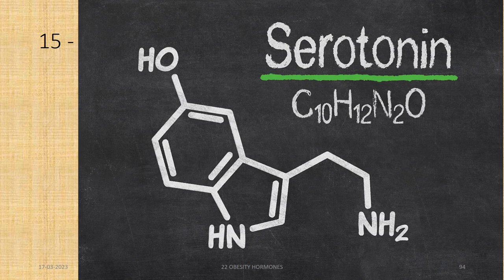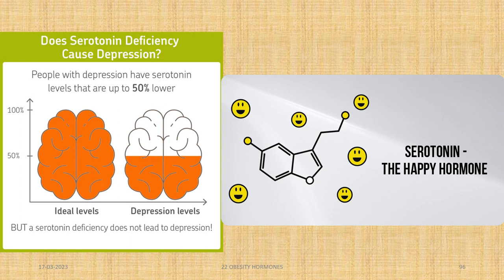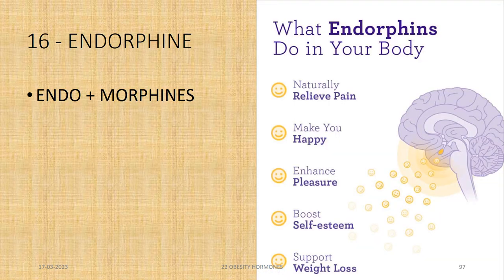Serotonin is an important mood hormone which gives us serenity, serendipity. It makes us seekers, regulates our sleep, makes our mind like a sanyasi or vitragi, and also controls our sexual desires. Serotonin deficiency leads to mood swings, and severe deficiency leads to depression. The word endorphin comes from endo plus morphins — the morphines produced in our own body. They naturally relieve pain, make us happy, enhance pleasure, boost self-esteem, and support weight loss.